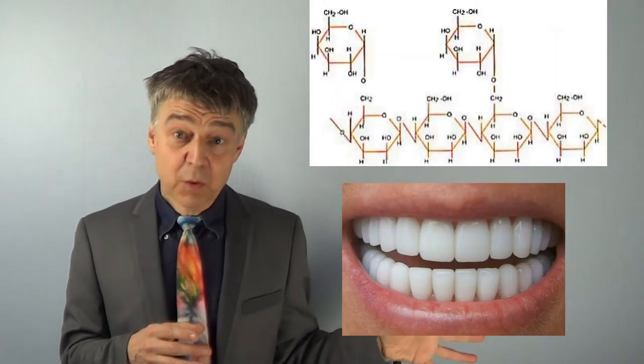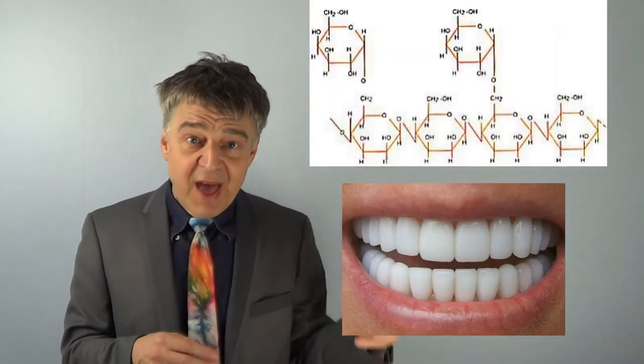We dissolve 10 grams of alum in 100 ml of water. And now we have everything we need for our chemical reaction.